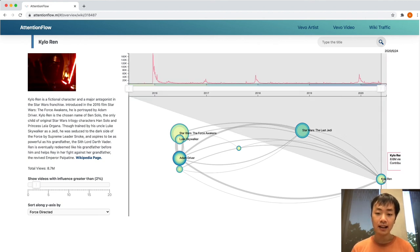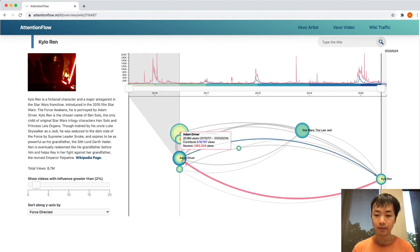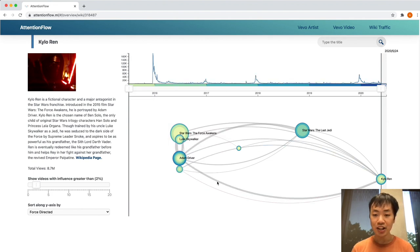In the movie, Kylo Ren is played by the actor Adam Driver over here. Here, the edges represent the hyperlinks between the pages, and the thickness of an edge is determined by the attention score from our RADflow model. The thicker an edge is, the more attention the model pays to the neighbor when predicting the views of the ego node.